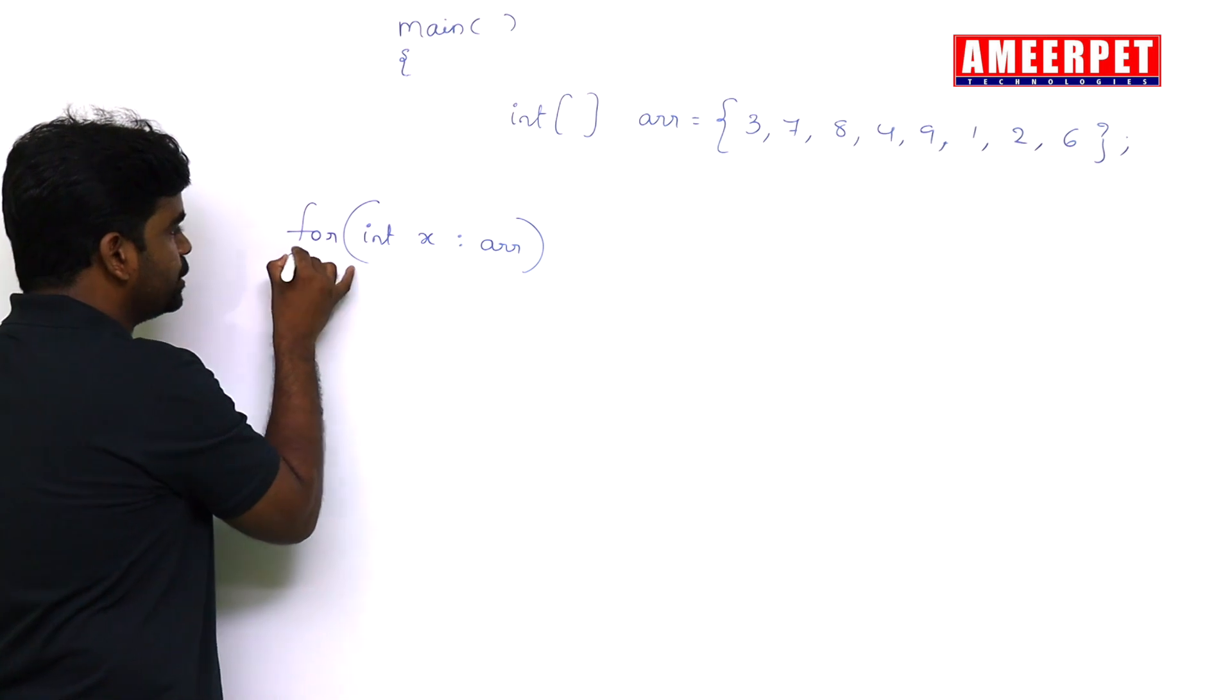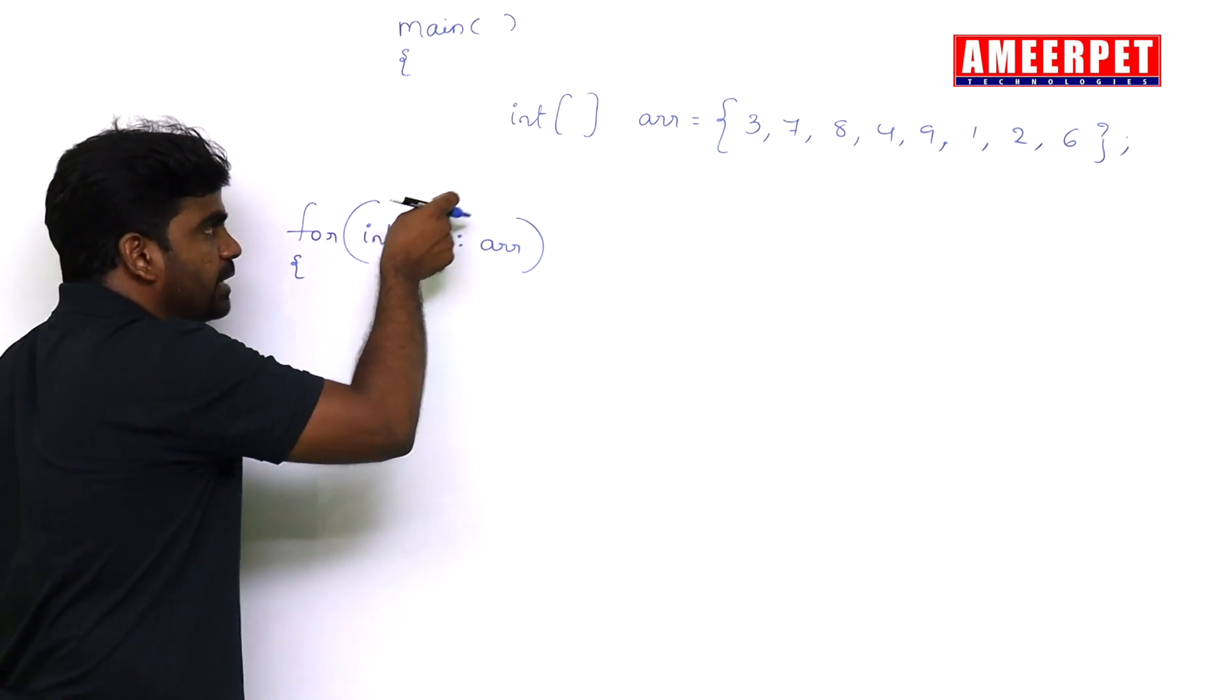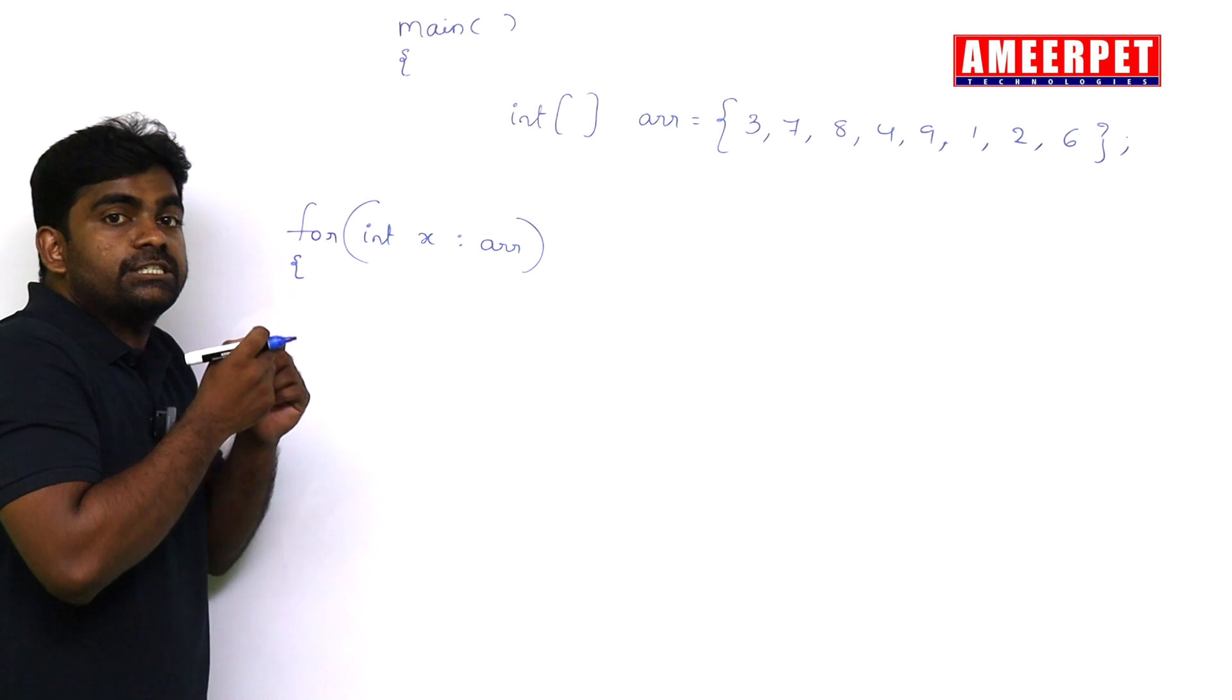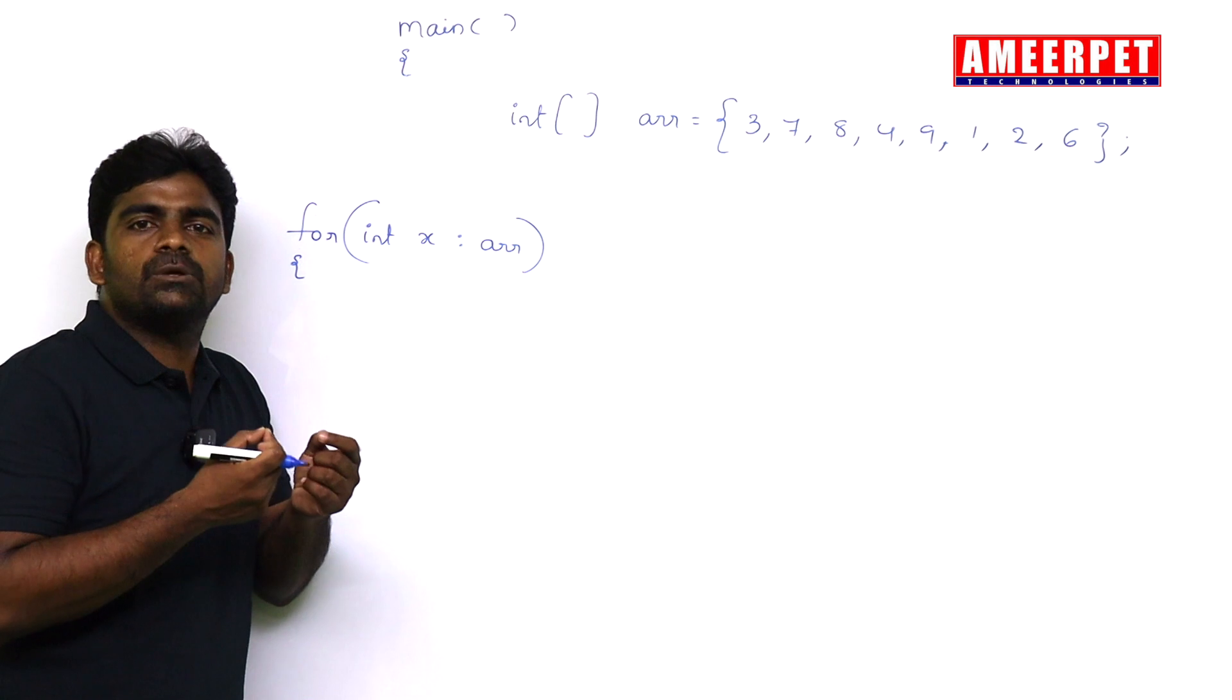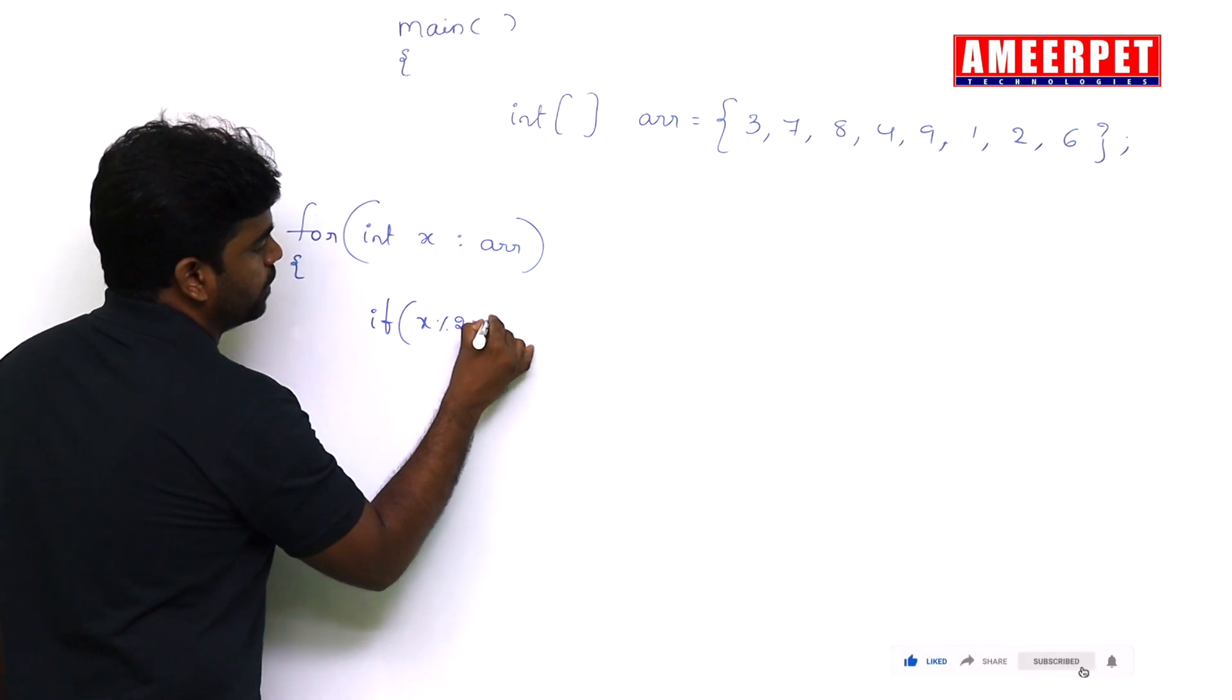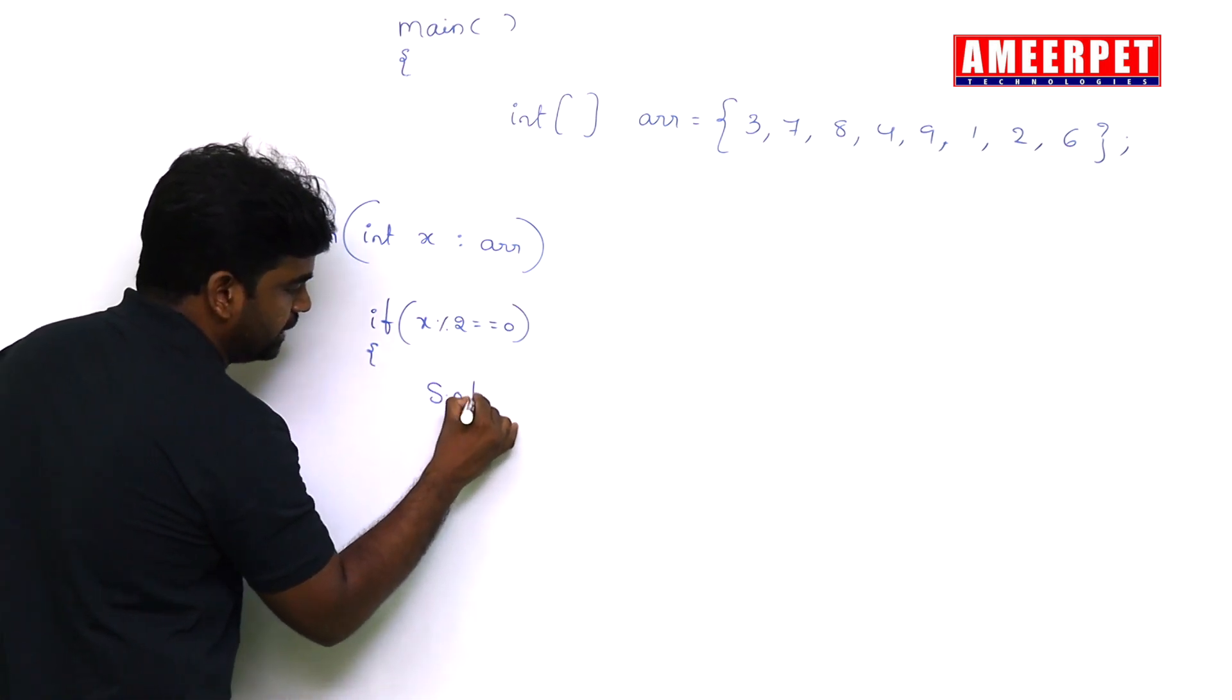Each element we are collecting. From this array, first x will come, that is three will come and store into this x. Now the question is checking that number is even or not. How to check? By using if condition: if x mod 2 equal to zero, if it is even, just print x.